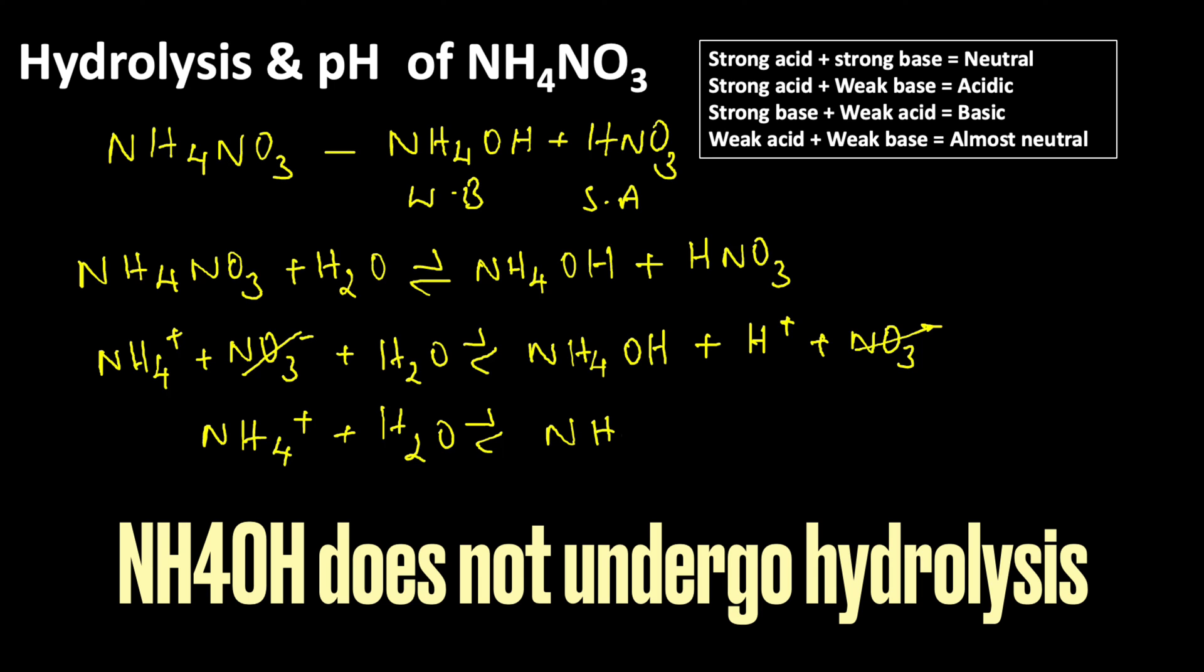We have unionized ammonium hydroxide plus H+. Since NH4OH stays in unionized form, the concentration of H+ ions in the solution is increased. Because of that, whenever strong acid and weak base react, the resulting solution is acidic.